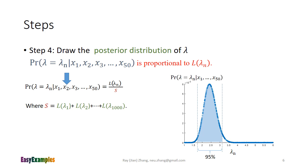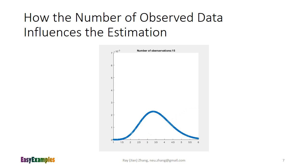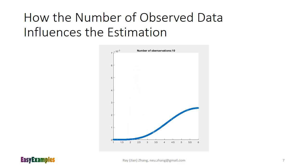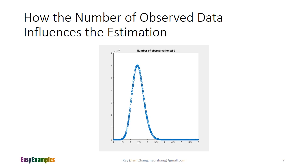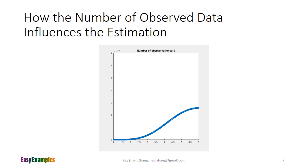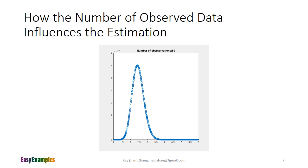Now we are able to draw the confidence interval. In this example, we show the 95% confidence interval, which means that any guess of lambda within this interval is acceptable at the 95% confidence level. In this animated figure, we show how the number of observed data samples influences the estimation. As the number of data samples increases, the PDF of the posterior distribution becomes narrower, meaning we have a more accurate guess of lambda. In practice, if we are unsure how many samples are enough, we increase the number gradually until the posterior PDF does not change significantly.